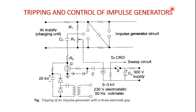To trip the generator at a particular predetermined time, the spark gaps may be mounted on a mobile frame by reducing the distance by moving one electrode closer to the other, creating the possibility of conduction between the two. However, this method is difficult and does not ensure consistency in control, so a simpler method uses the three electrode gap arrangement, as seen in the generator circuit.